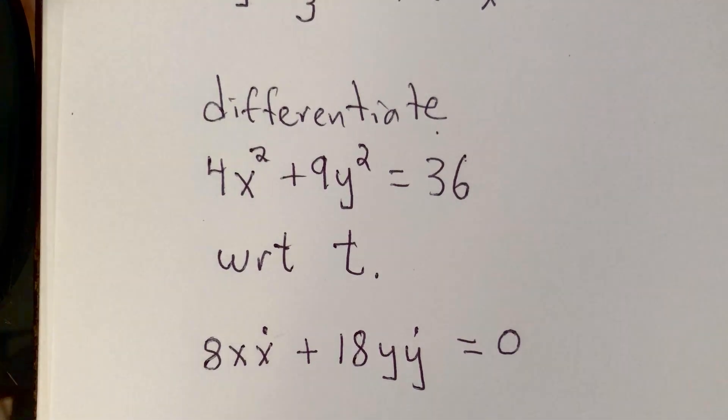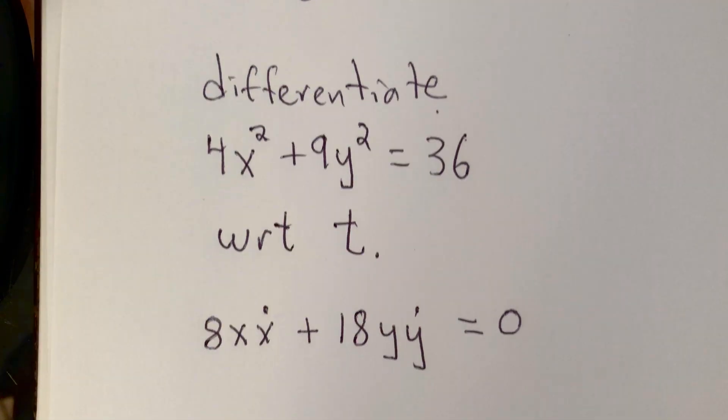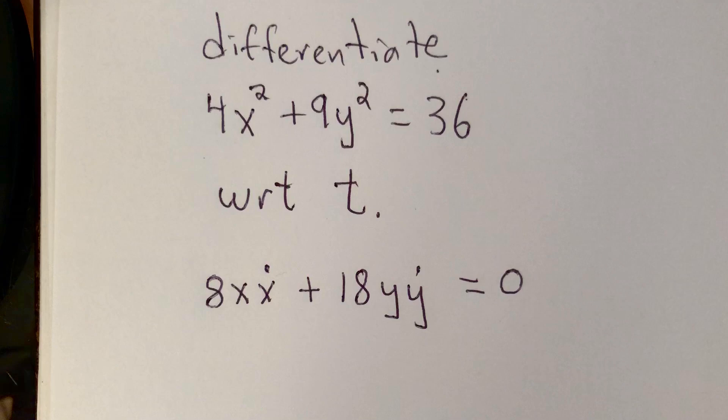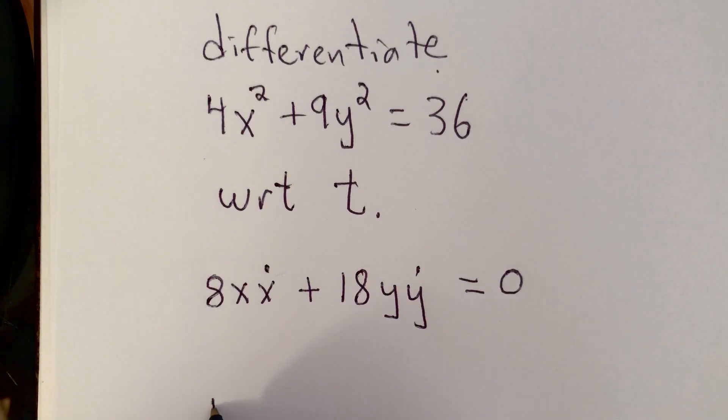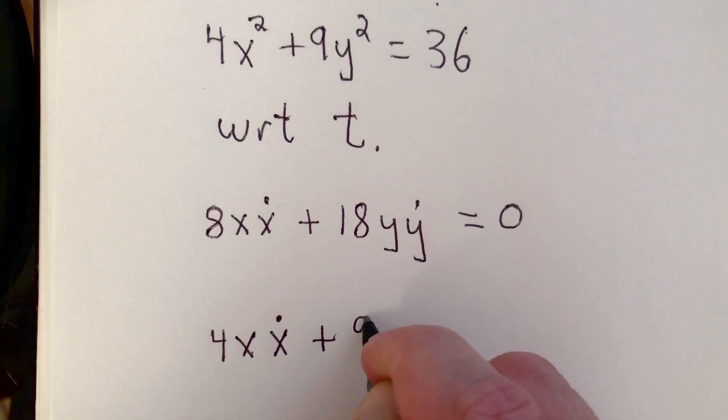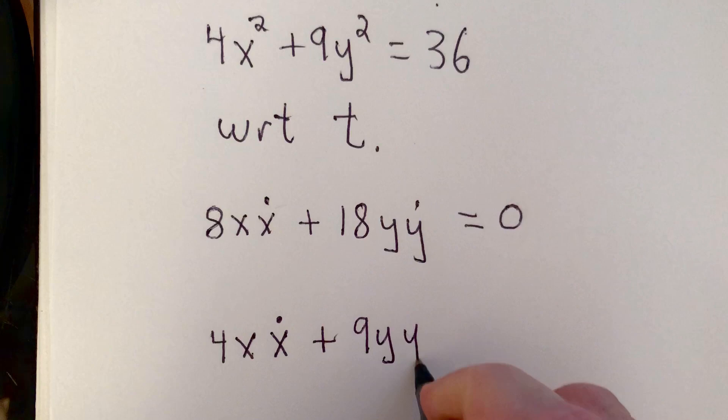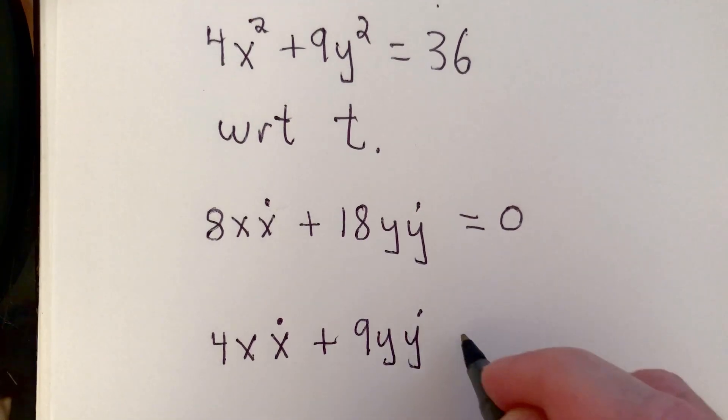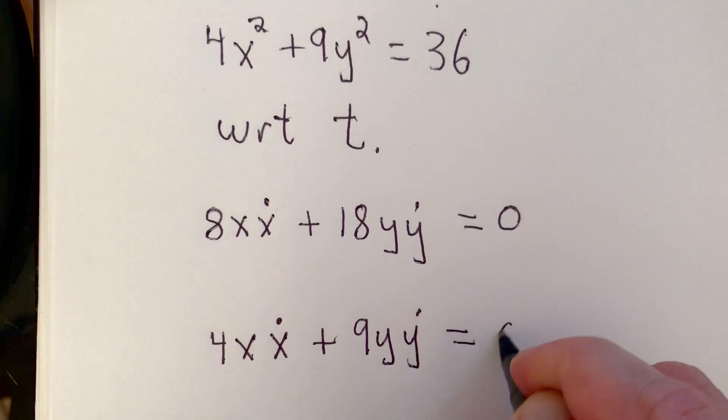Remember, the derivative of a constant is 0. Now, I can simplify this equation a bit. I could divide both sides by 2, and that would give me 4x times x dot plus 9y times y dot equals 0.